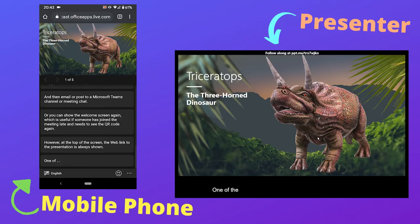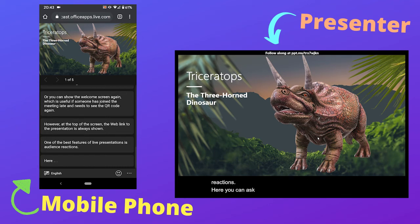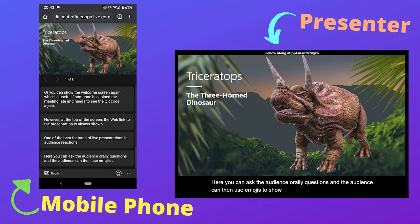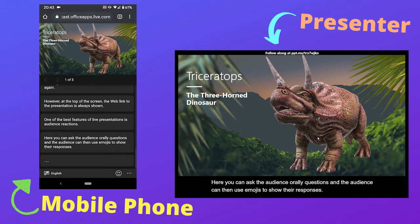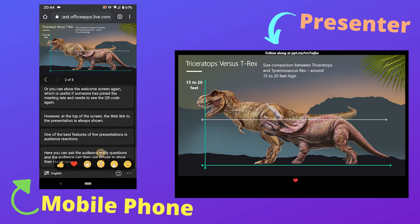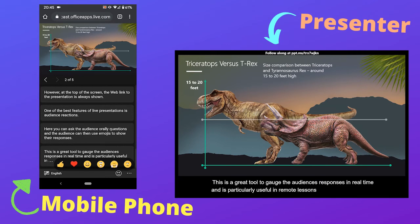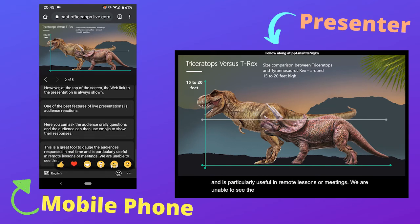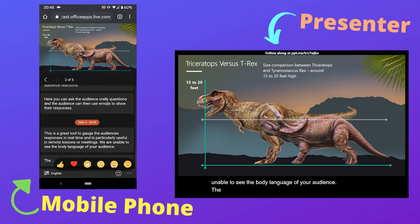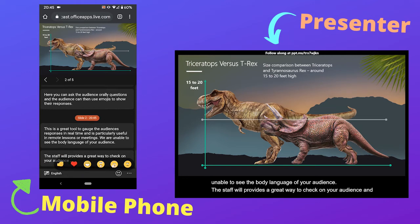One of the best features of live presentations is audience reactions. You can ask the audience oral questions and the audience can then use emojis to show their responses. This is a great tool to gauge the audience's responses in real time, and is particularly useful in remote lessons or meetings where you are unable to see the body language of your audience. This provides a great way to check on your audience and make the presentation more interactive.